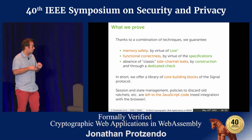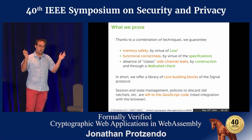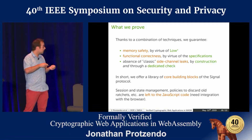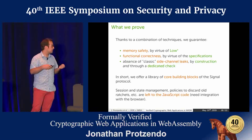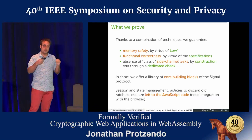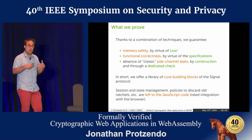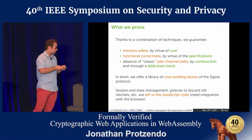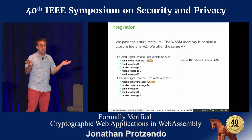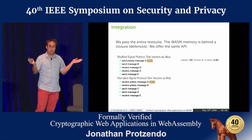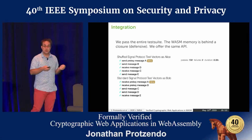The verification results are as follows. We show memory safety: our code is not going to throw an exception because the WASM code decided to read outside of its allocated memory. We show that the code is doing the right thing — that it matches the functional specifications. We also show an absence of classic side channel leaks, namely using secrets for branches or using secrets for memory accesses. We take the existing libsignal, replace all of the core actions from the protocol with ours, pass the exact same test suite, and offer the exact same API as a drop-in replacement with greater assurance.